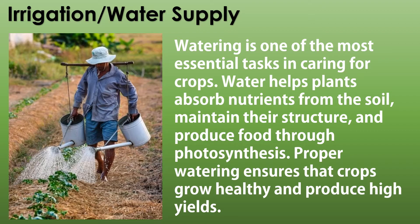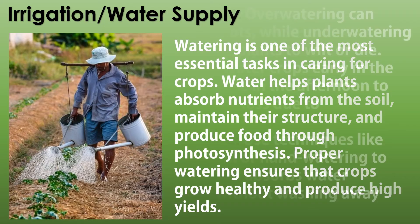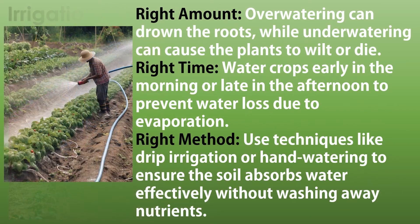Watering is one of the most essential tasks in caring for crops. Water helps plants absorb nutrients from the soil, maintain their structure, and produce food through photosynthesis. Proper watering ensures crops grow healthy and produce high yields. Overwatering can drown the roots, while under-watering can cause plants to wilt or die. Water crops early in the morning or late in the afternoon to prevent evaporation. Use techniques like drip irrigation or hand watering to ensure the soil absorbs water effectively without washing away nutrients.